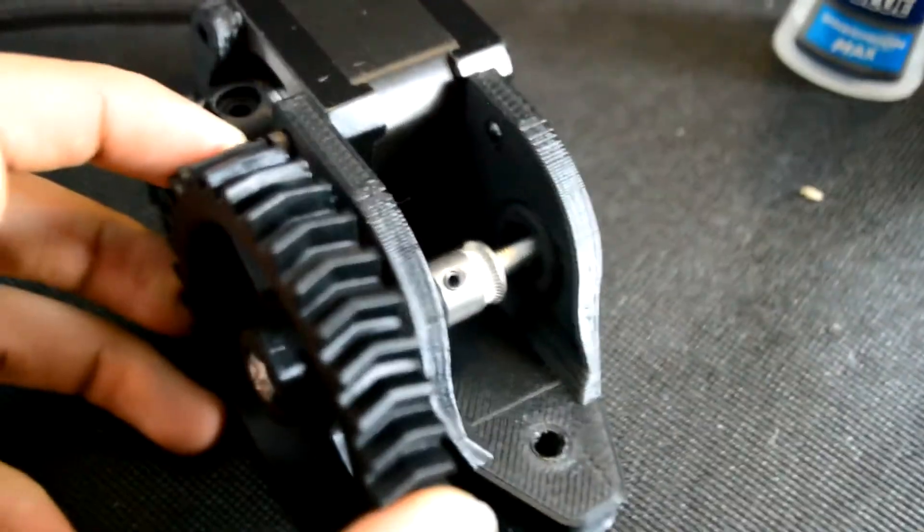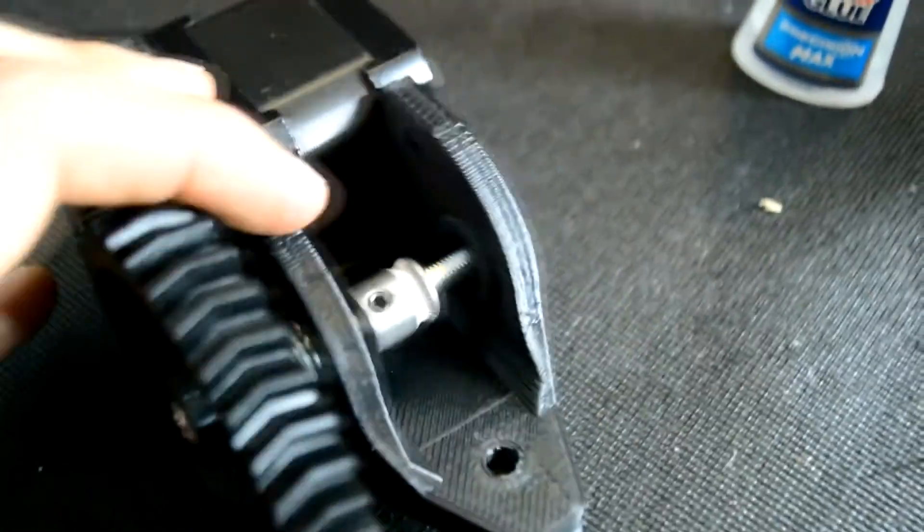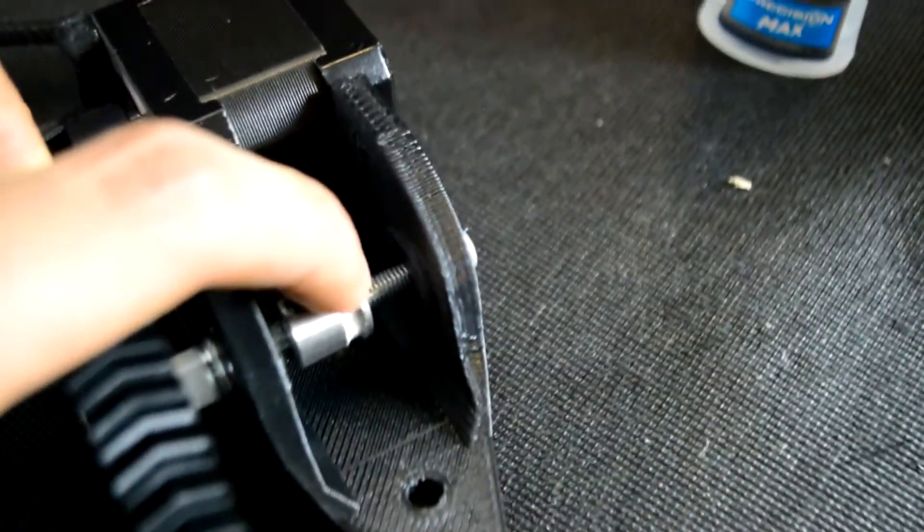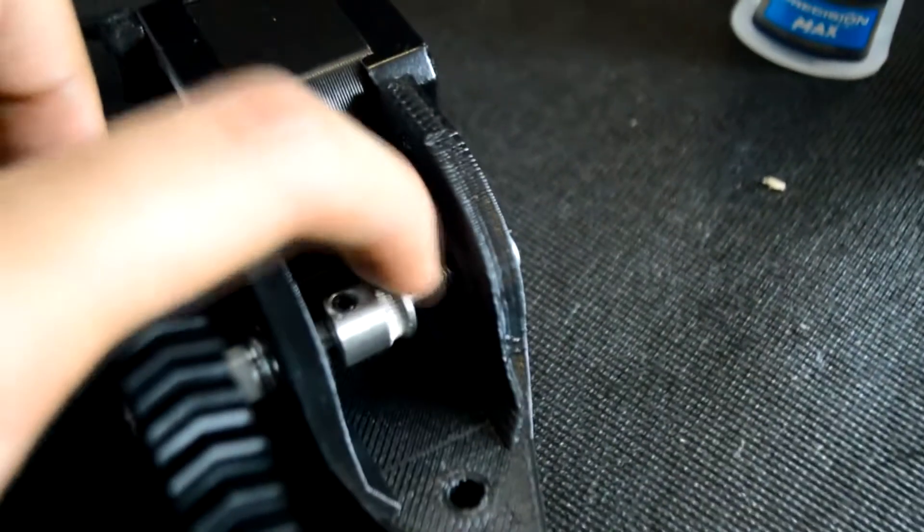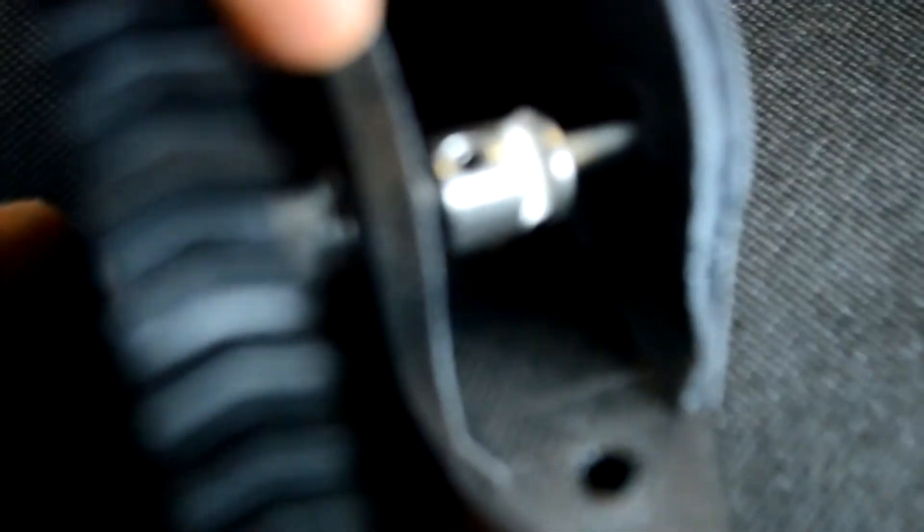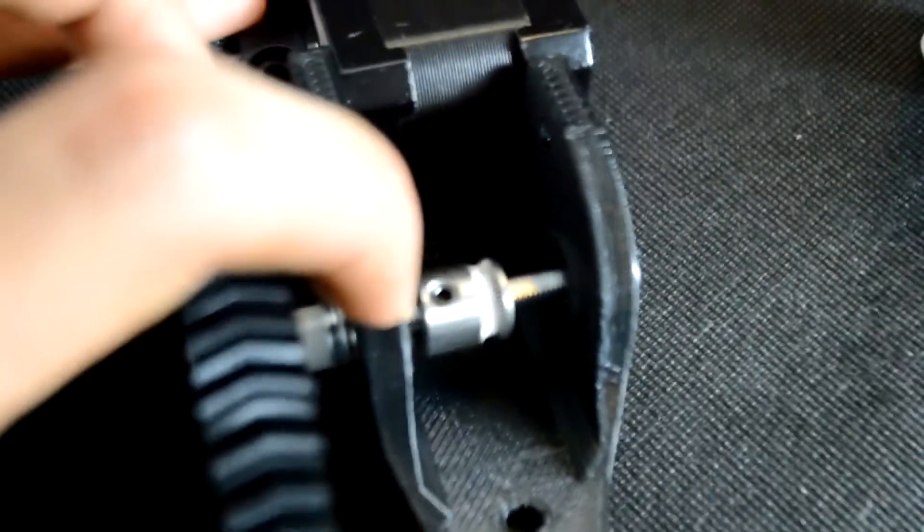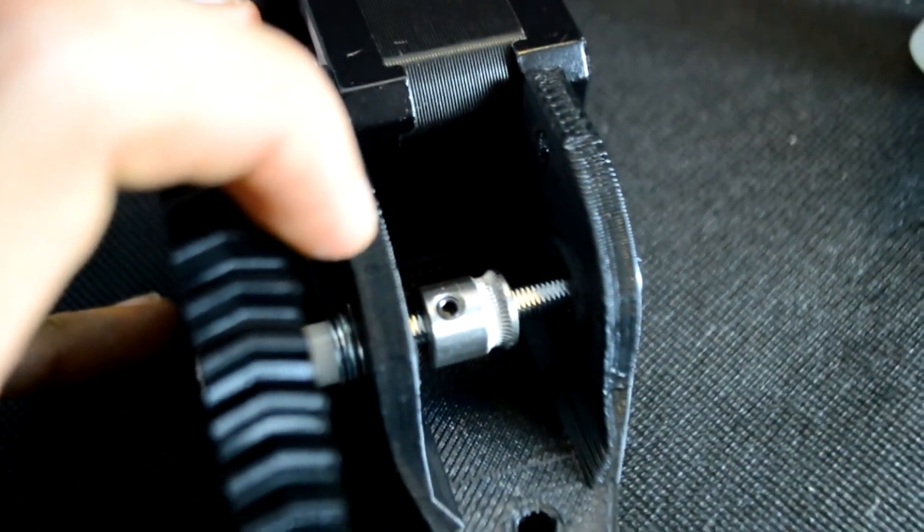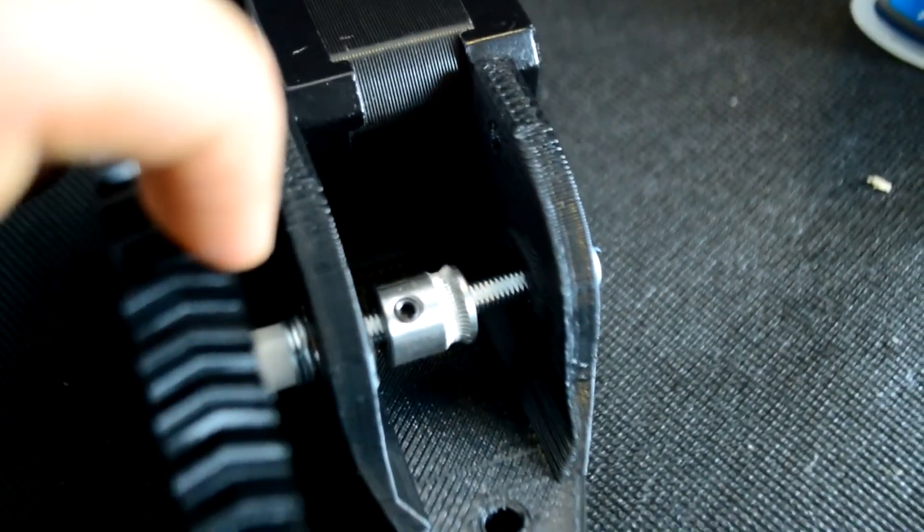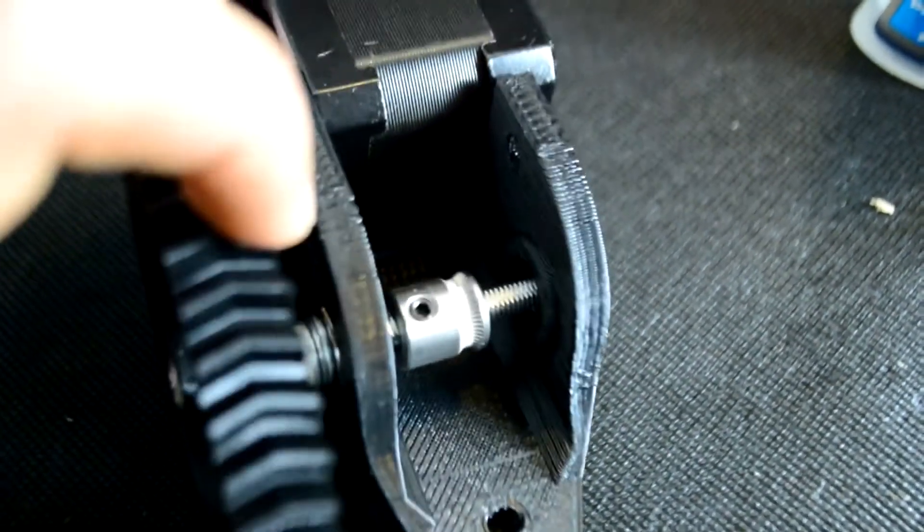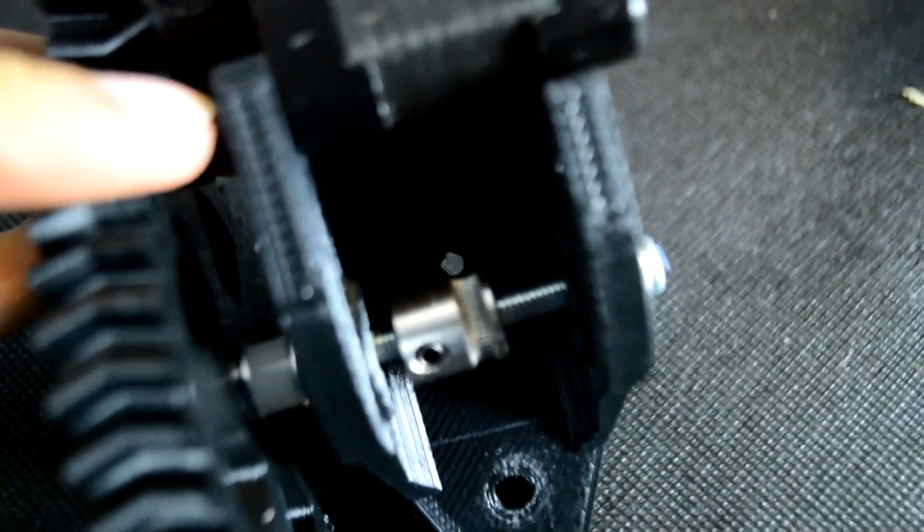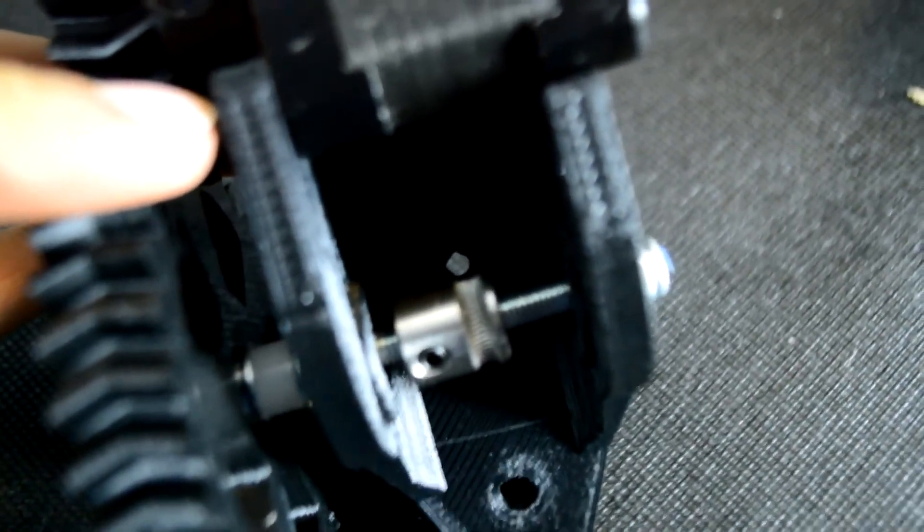And also another point to take note of on the feeder assembly is that I highly recommend filing a flat onto the 5mm hex bolt and then clamping this set screw on the feeder gear down onto that flat side. Hopefully you can see the flat that I filed onto the bolt. And once you've lined it up with the hole in the base of the feeder.